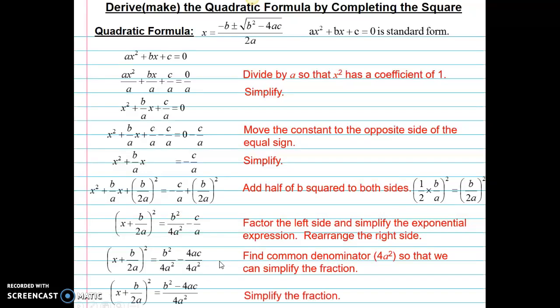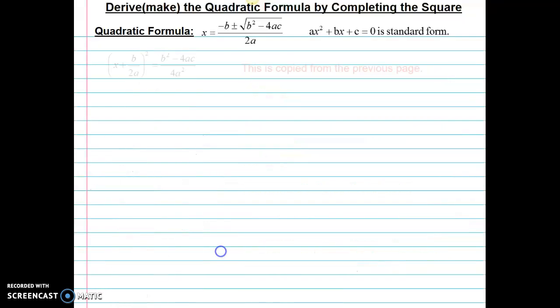Simplifying that fraction, I have x plus b over 2a quantity squared equals b squared minus 4ac all over 4a squared.